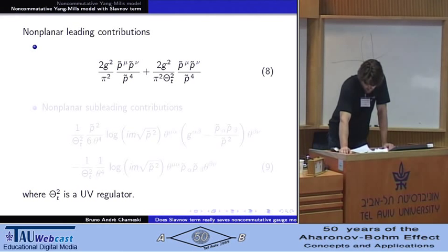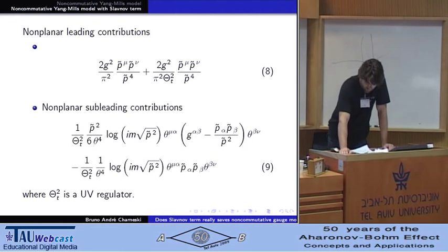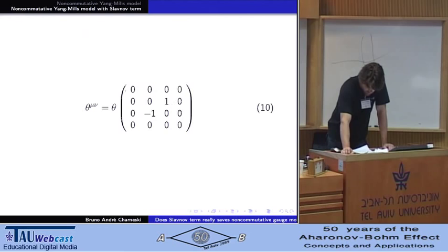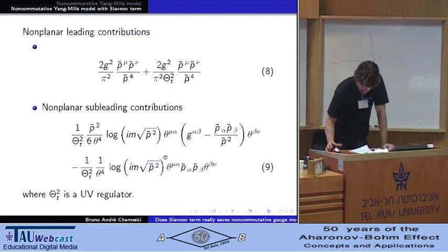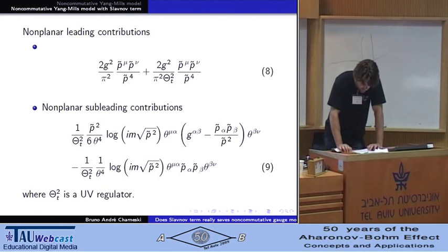But now we are studying the sub-leading divergences, which, although are logarithmic, due to the contribution of new diagrams and the noncommutative configuration of spacetime, display a mixture of ultraviolet and infrared divergences. And this mixture are not cancelled in loop diagrams and therefore represent a risk to the validity of the Slavnov proposal.